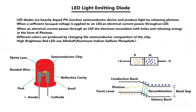When a sufficient forward voltage is applied to an LED, an electrical current passes through it. The electrons recombine with holes, releasing energy in the form of photons.